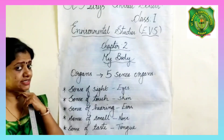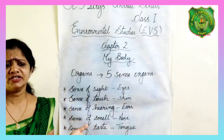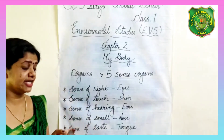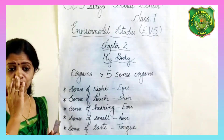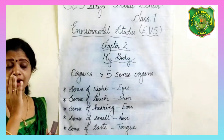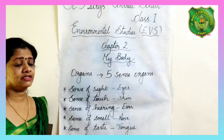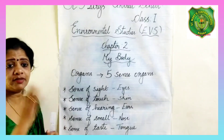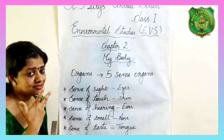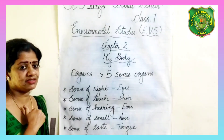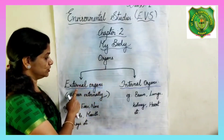Our head has eyes, nose, ears, mouth, and hair. And the front portion of our head is called the face.